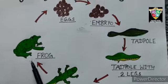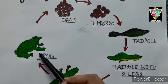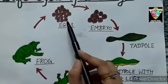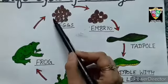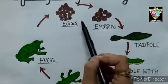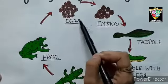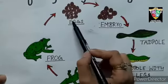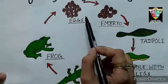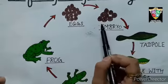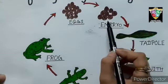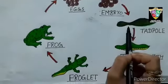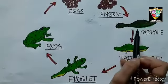Starting with stage 1: Egg. The female frog lays thousands of jelly-covered eggs at a time in water. This jelly holds and protects the eggs. After this, the male frog fertilizes these eggs. This whole mass of fertilized egg with jelly is called frog spawn. As the fertilized egg matures, it splits into more cells and forms a tadpole. Within 1 to 3 weeks, the egg hatches and tadpoles come out.